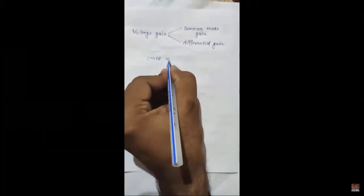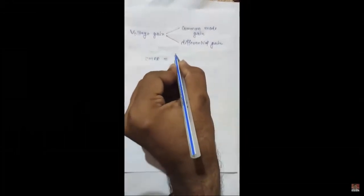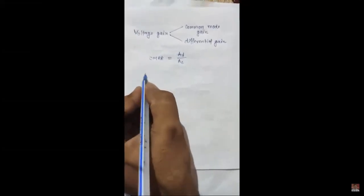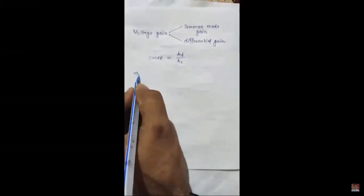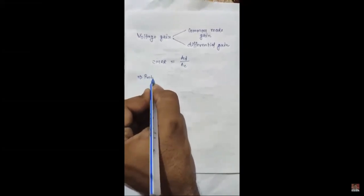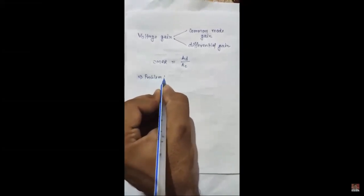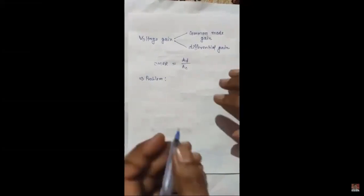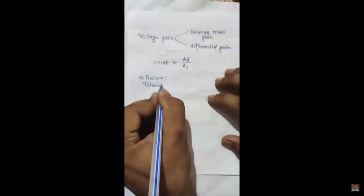It is very important to have very high differential gain. The third parameter is CMRR — common mode rejection ratio. Common mode rejection ratio is calculated by the ratio of differential mode gain to common mode gain.